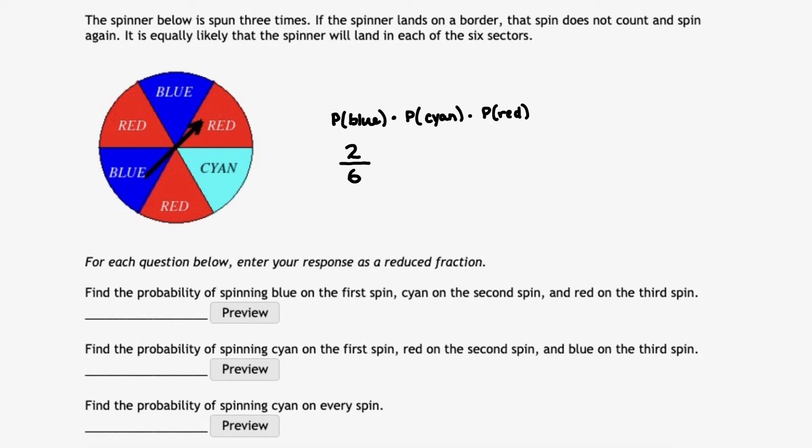But now when I go to spin again, I'm back to the original spinner. And so now I have to take the probability of getting cyan. And how many different ways can I get cyan? Well, notice there's only one sector that has cyan in it. But again, there are six total sectors in that spinner. So the probability of getting cyan is one out of six.